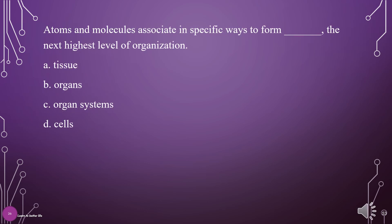Atoms and molecules associate in specific ways to form what — the next highest level of organization? A. Tissue, B. Organs, C. Organ systems, D. Cells. The answer is D: Cells.